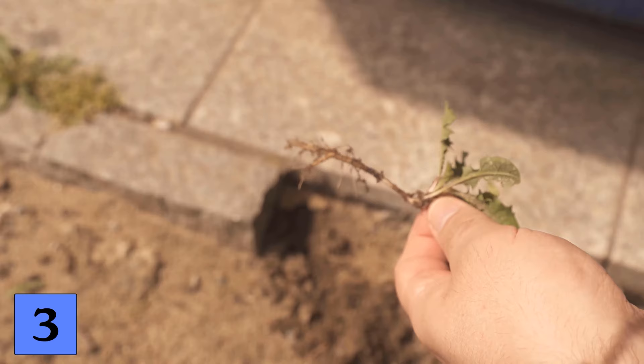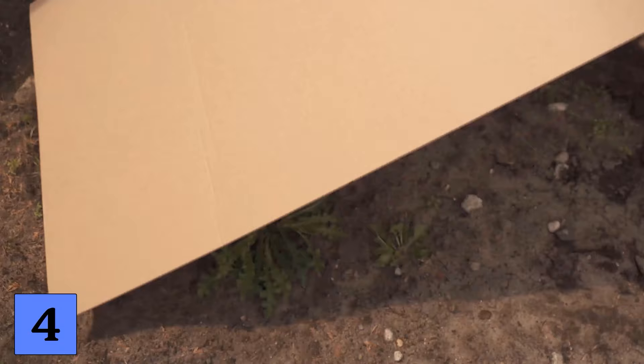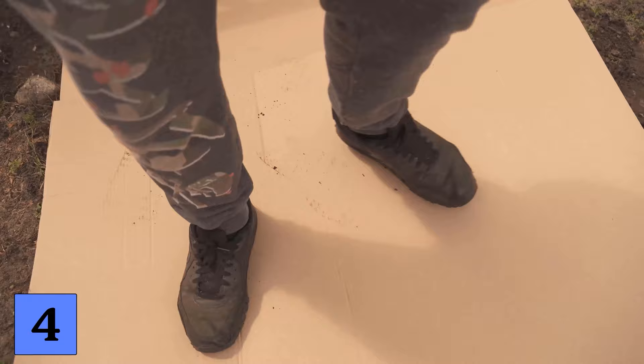If you have a larger area in the garden where weeds keep appearing, you can also seal the whole thing with a little cardboard. To do this, first take away a little bit of soil, then lay out a nice large area of cardboard in your garden. And now start putting the soil back on the cardboard.